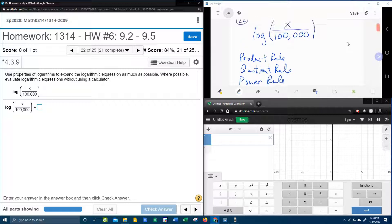When you're going to expand, you're looking for multiplication, a fraction, or an exponent. Here we can see that we are taking the log of something that has a fraction, and that is going to indicate the quotient rule.